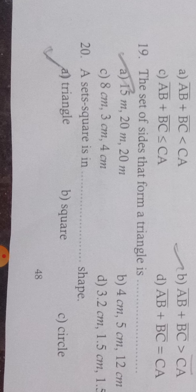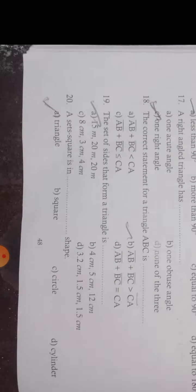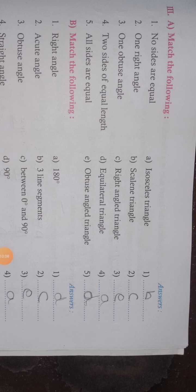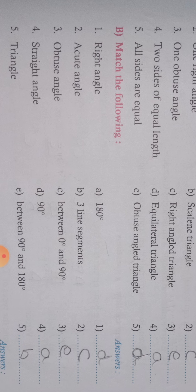Your set square is in triangle shape — in your geometry box you have a protractor and a triangle-shaped scale. No sides equal means scalene triangle. One right angle means right-angled triangle. One obtuse angle means obtuse angle triangle. Two sides equal means isosceles triangle. All sides equal means equilateral triangle. Acute angle is 0 to 90 degrees; obtuse angle is 90 to 180 degrees; straight angle is exactly 180 degrees. A triangle is made of three line segments.